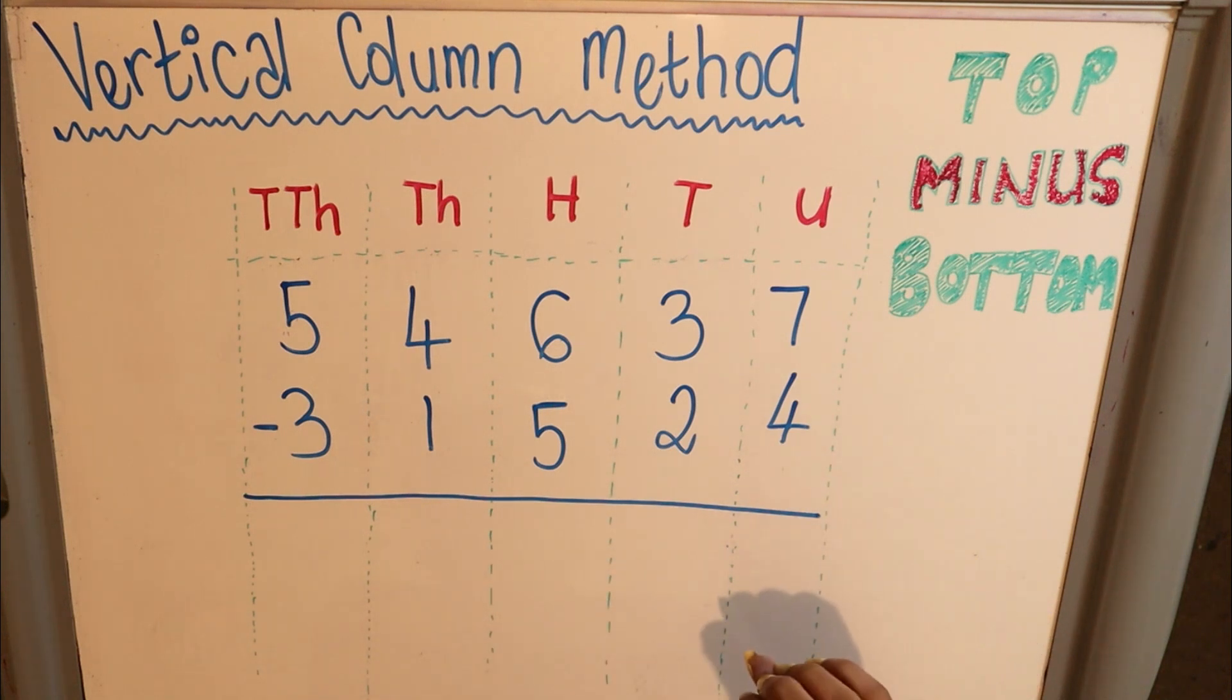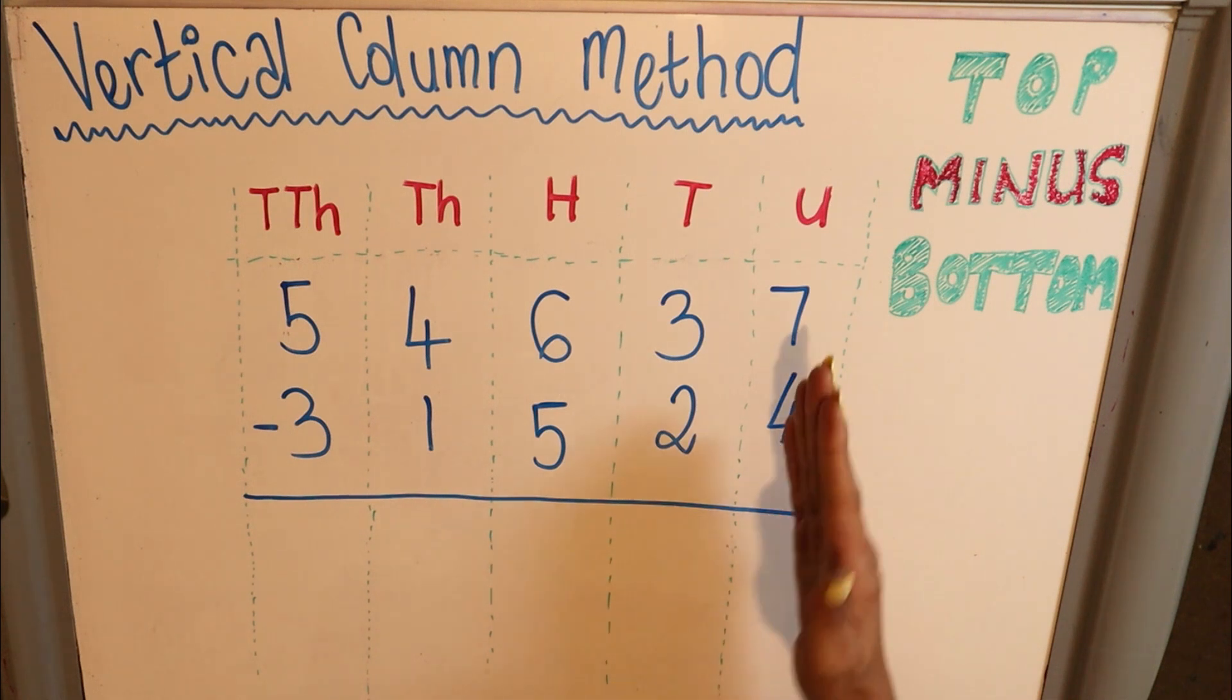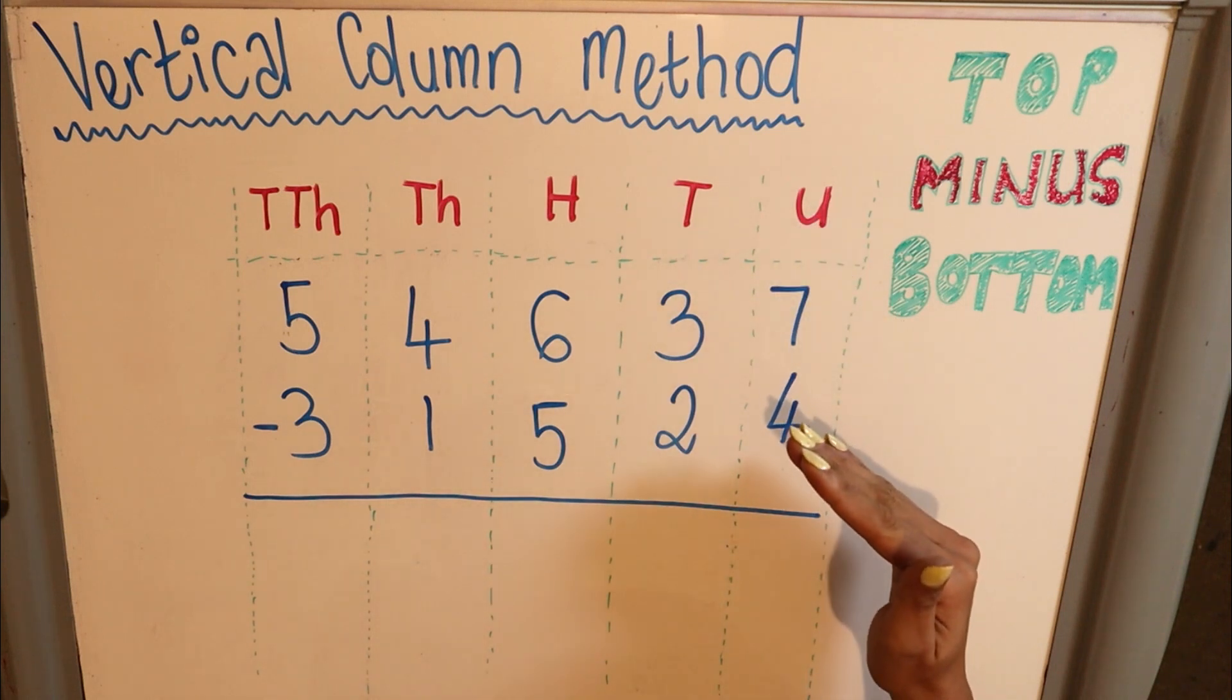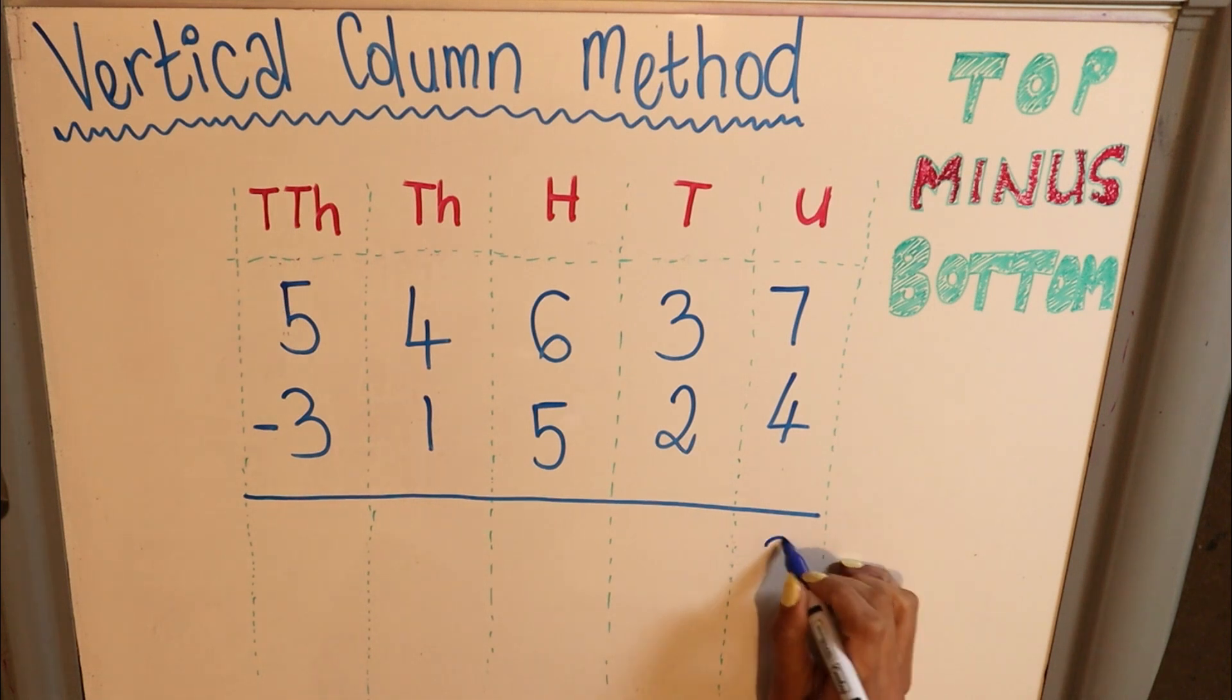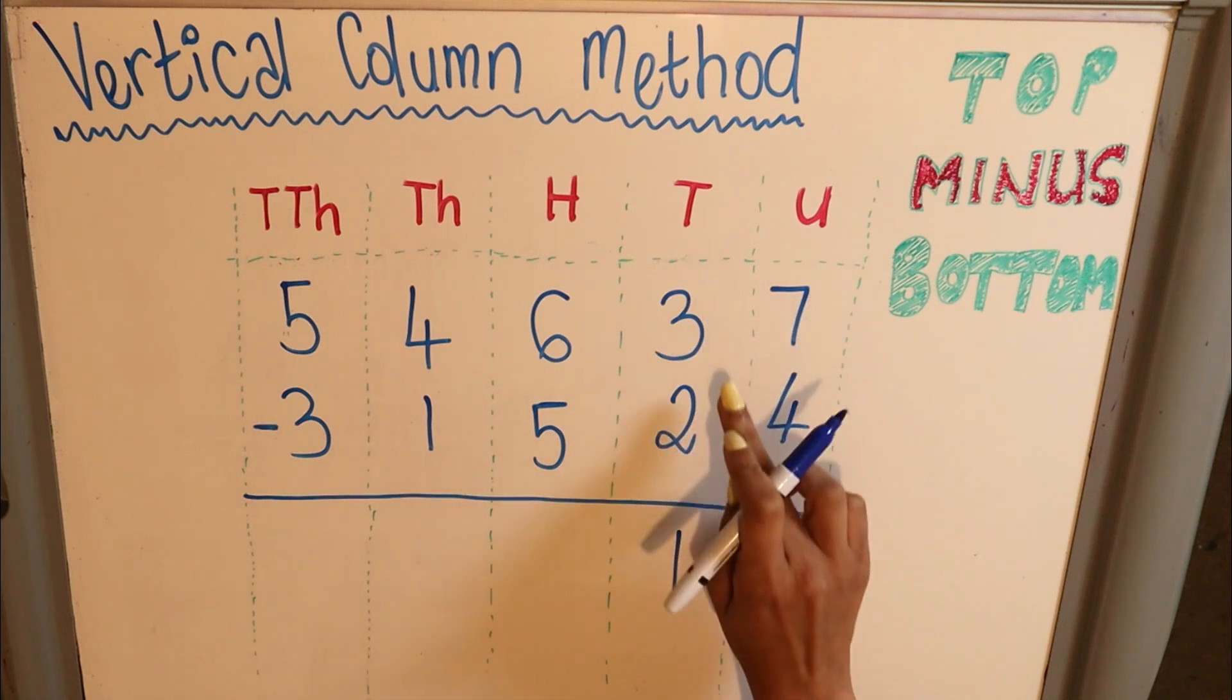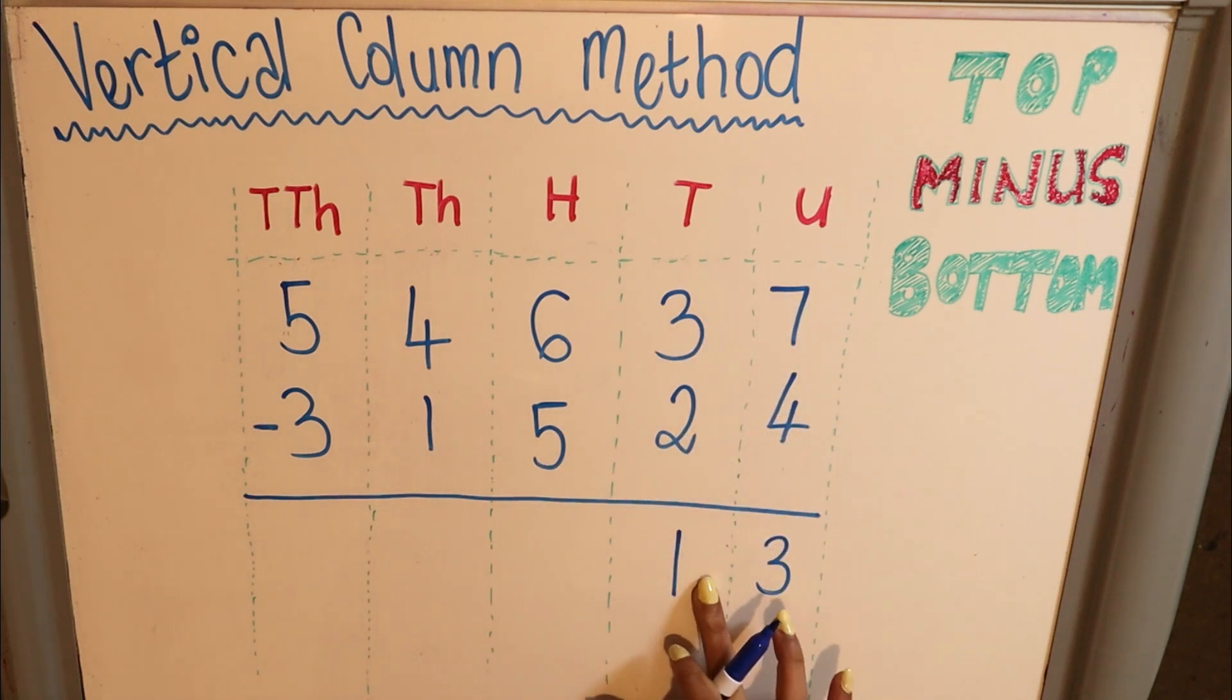For this example there won't be any borrowing, it's going to be quite simple. Let's just get into the flow of things starting from your units. 7, the top number, minus the bottom number which is 4. 7 minus 4 is 3. Then 3 minus 2 is 1. Now remember this is actually 30 minus 20 equals 10, but we'll focus on one column at a time to make it easier for subtraction.